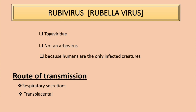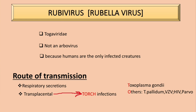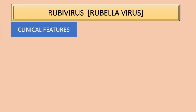Transplacental means vertical transmission — this virus can cross the placenta, making it one of the TORCH infections. Let's review them: Toxoplasma gondii; Others, which include Treponema pallidum causing syphilis, Varicella-zoster, HIV, Parvovirus B19, and Listeria monocytogenes; Rubella, which we are discussing now; Cytomegalovirus; and Herpes simplex virus.